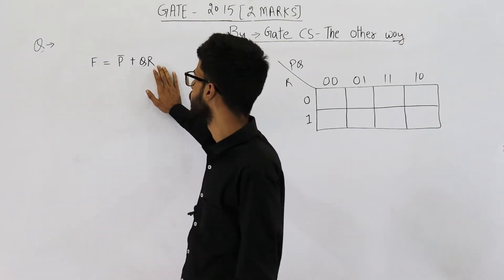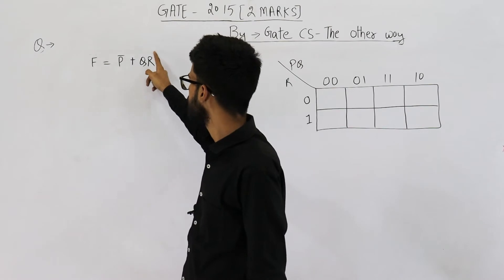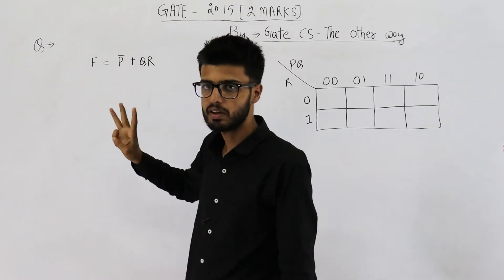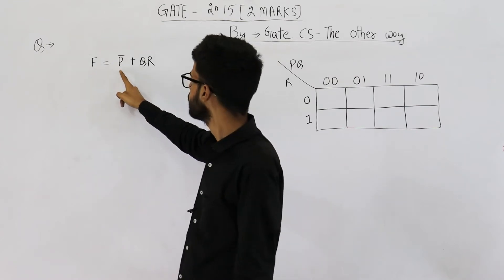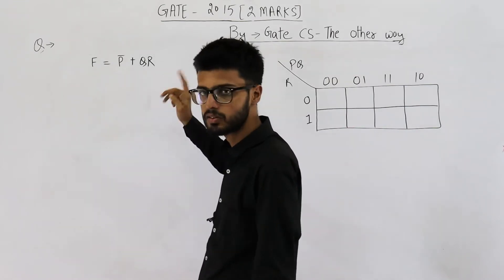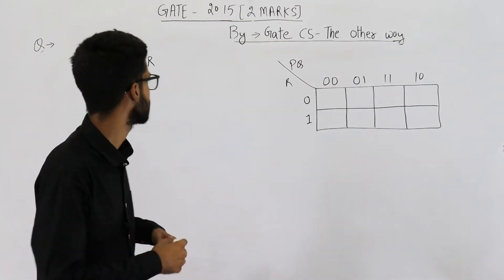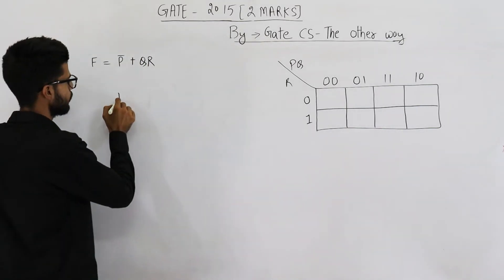First, we need to make each and every term consisting of three variables. This function is dependent on three variables P, Q, and R. And each term here must consist all the three variables. Let's do that. So just note what I am doing.